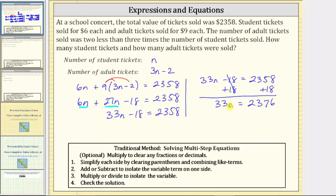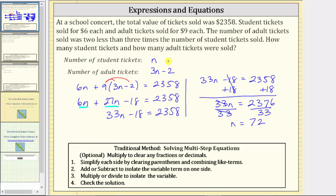The last step is to multiply or divide to solve for n. Because 33n means 33 times n, the next step is to divide both sides by 33. Simplifying, 33 divided by 33 is 1, and 1 times n is n, so n equals 2376 divided by 33, which equals 72. Now we know there were 72 student tickets sold. The number of adult tickets sold, which equals 3n minus 2, is 3 times 72 minus 2, which is 216 minus 2, which equals 214.